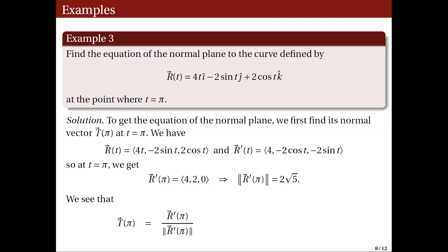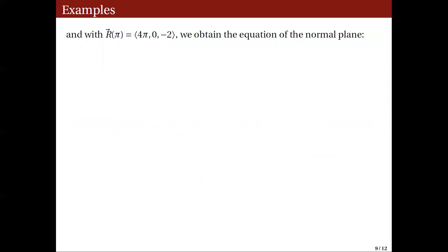So T(π) = r'(π) / |r'(π)| = (4, 2, 0) / (2√5) = (2/√5, 1/√5, 0). With r(π) = (4π, 0, −2), the equation of the normal plane is: (2/√5)(x − 4π) + (1/√5)(y − 0) = 0. There is no z variable because the third component of the unit tangent vector is 0.